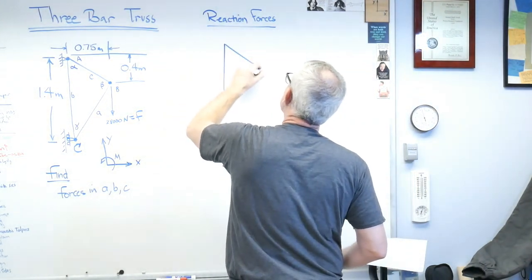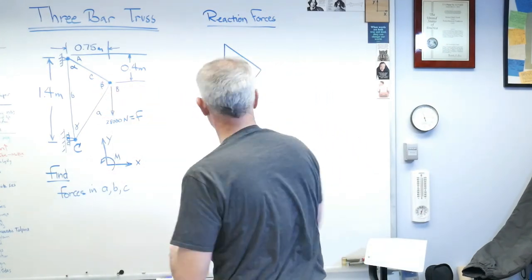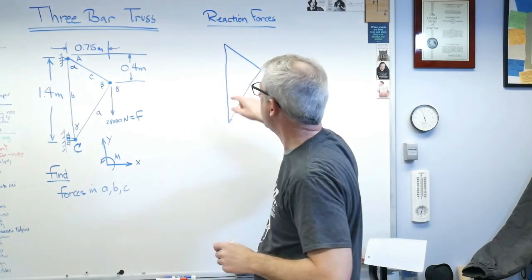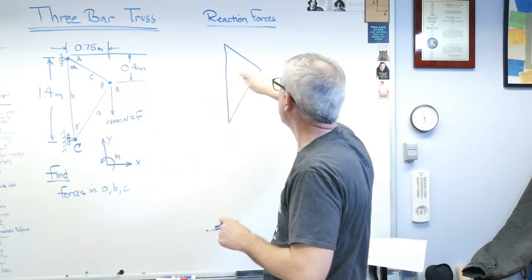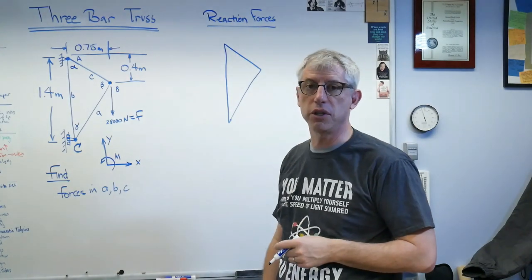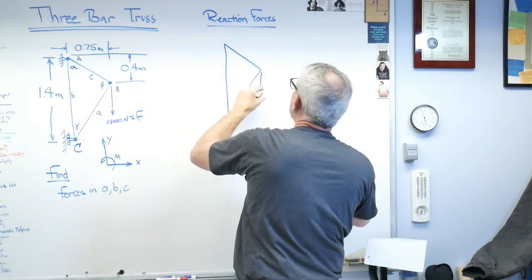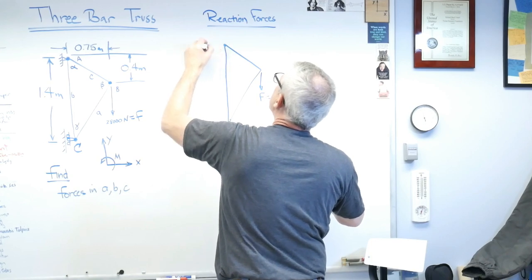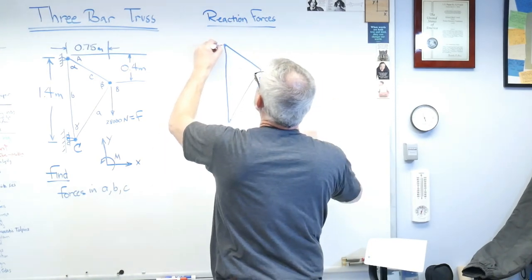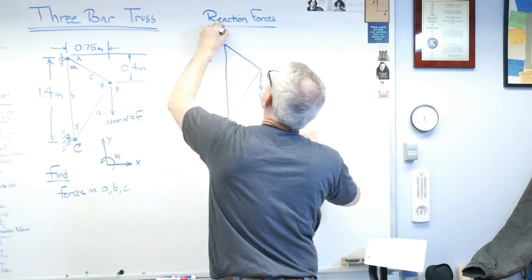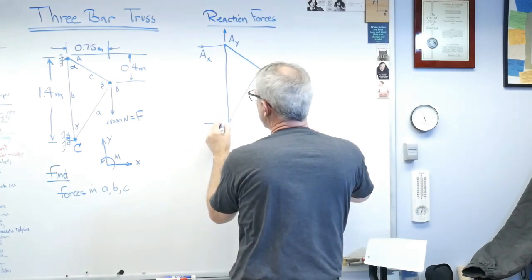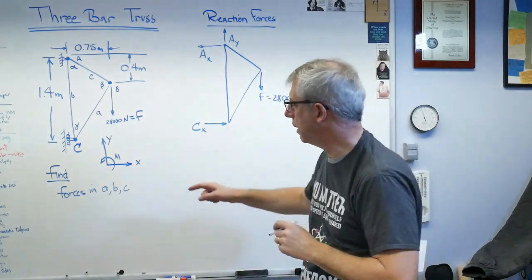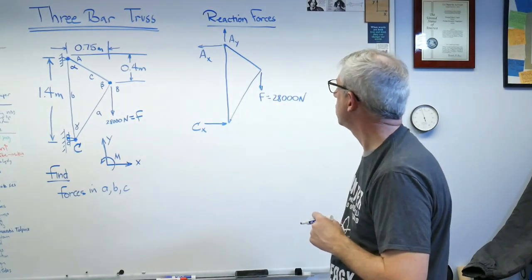Let's draw just this. For the time being, I don't really care what the forces in the elements are - I only care what the reaction forces are. So I'm going to draw this as just a rigid triangle. F is 28,000 newtons. That's point A, so I'll label my reaction forces: A sub X and A sub Y at point A. And I'm going to guess that there's my reaction force C sub X at point C - that's capital C, the force acting at that point. So that's the free body diagram.